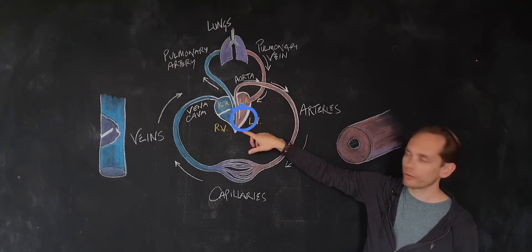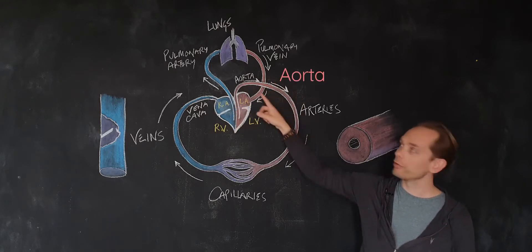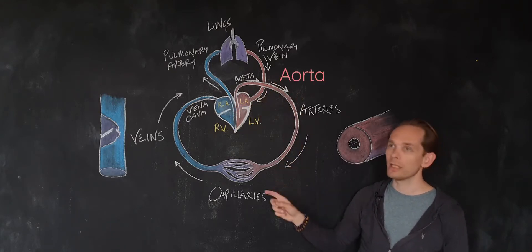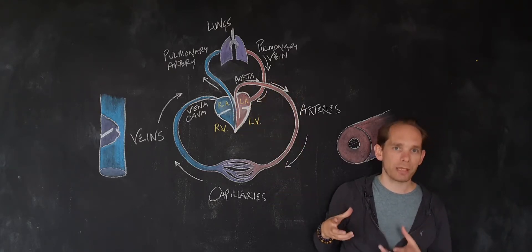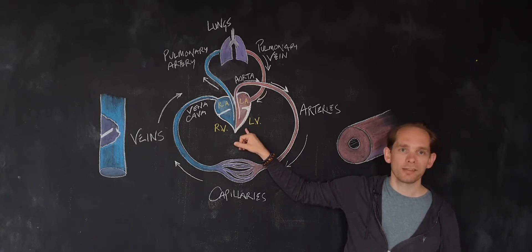Left ventricle—and the left ventricle pumps the blood out through the aorta to the rest of the body. And the left ventricle, doing that big job of pumping blood to the body, is much thicker and stronger than the right ventricle.